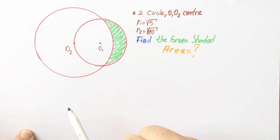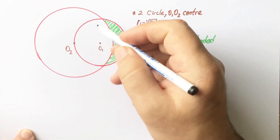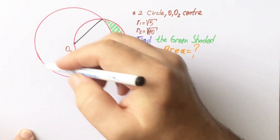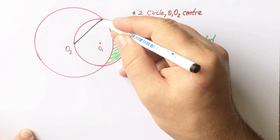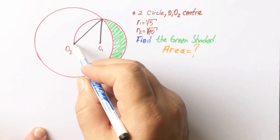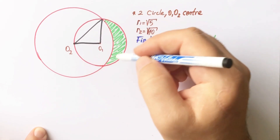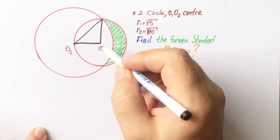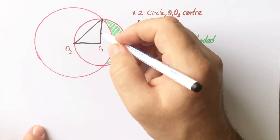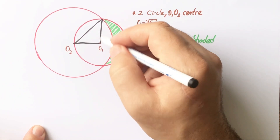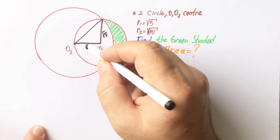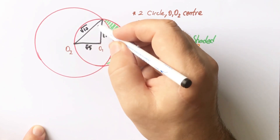The green shaded area is what we need to find. First step: let's connect here. This length is the radius of the large circle, and this length is the radius of the small circle. Let's also connect here — this length is also the radius of the small circle, which equals √5. And the radius of the large circle equals √10.